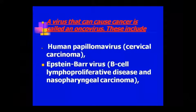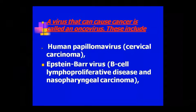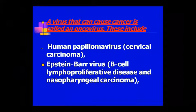The etiological agents also include biological agents — viruses that cause cancer, which we call oncoviruses. These include HPV and EBV. HPV, the human papillomavirus, causes cervical carcinoma. EBV, the Epstein-Barr virus, causes B-cell lymphoproliferative diseases.